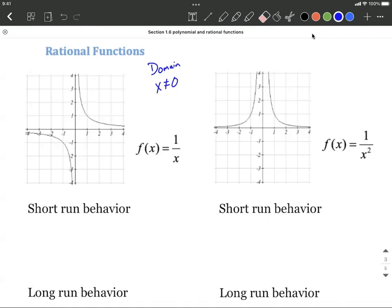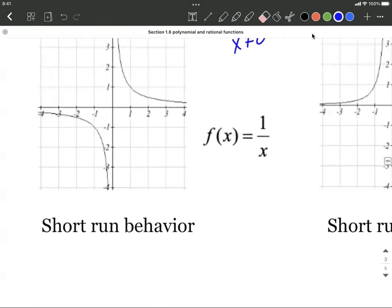So x-intercepts could be included as short run behavior but this one doesn't seem to have any x-intercepts. Let's focus in on this graph. Instead what happens is we're not allowed to plug in 0 so we don't have a point on our graph at an x value of 0.